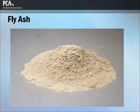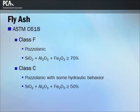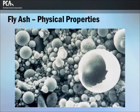Fly ash is a byproduct of the combustion of pulverized coal in electric power generating stations. Fly ashes are divided into two classes in accordance with ASTM C618: class F and class C. Class F fly ash has pozzolanic properties and is normally produced from burning anthracite or bituminous coal. Most fly ash particles are fine solid spheres, although some are hollow cenospheres as pictured here.